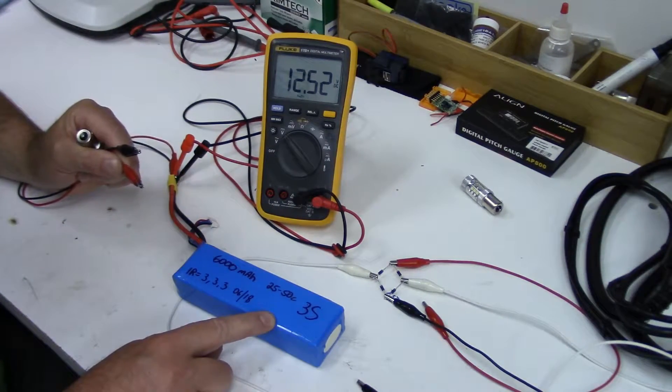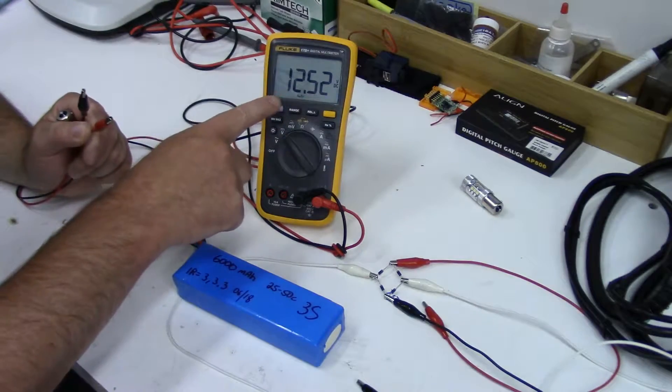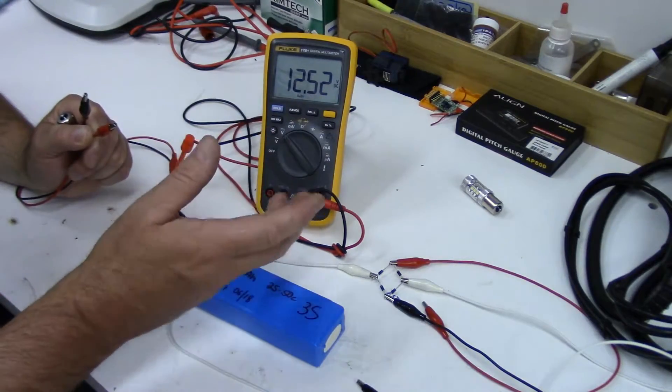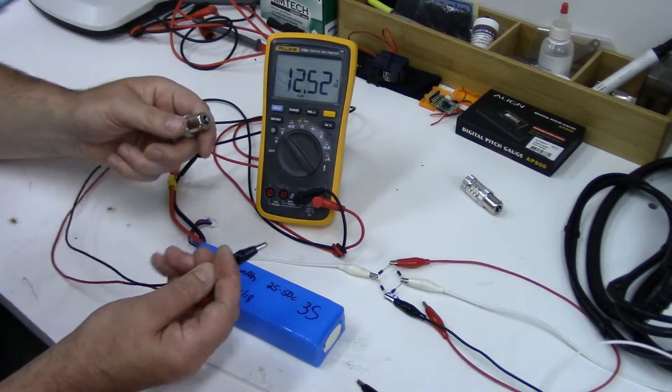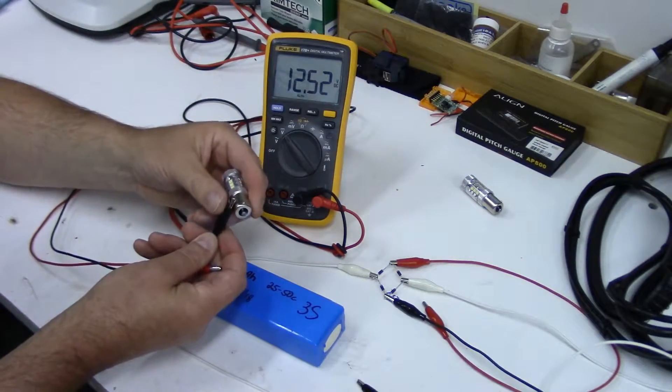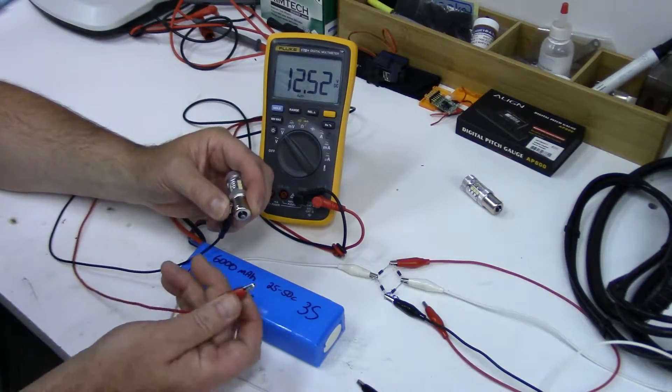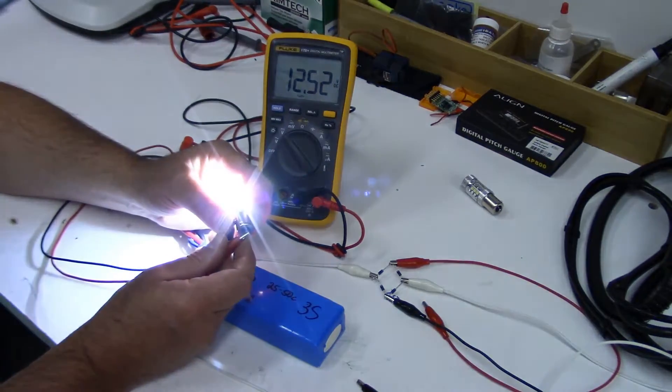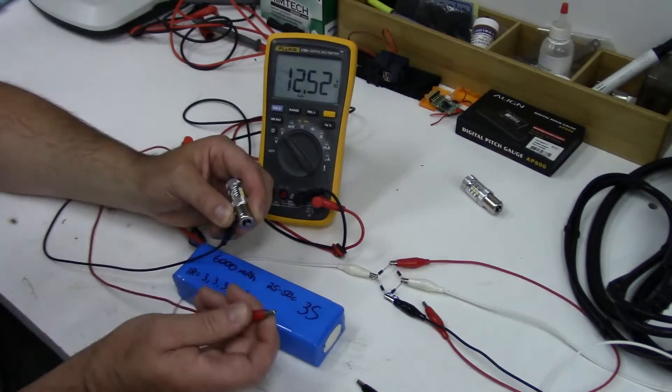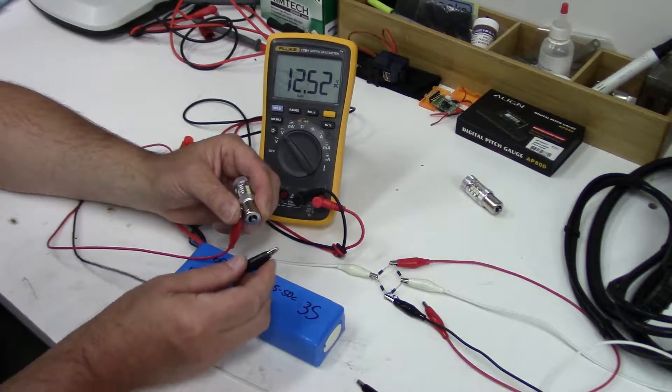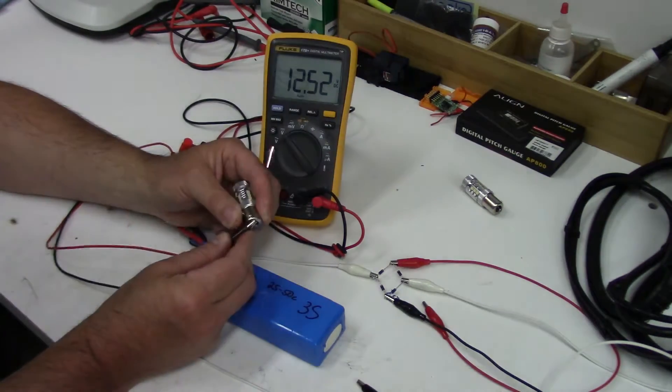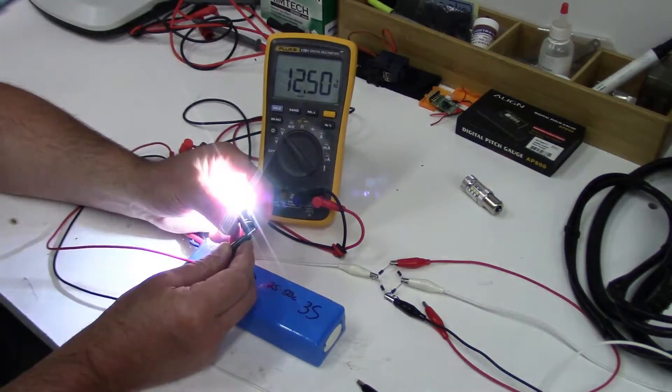We've got a 3S lipo pack with the meter hooked up to it. It's putting out pretty much fully charged 12.52 volts DC. So we'll just do it the normal way. Negative on the base, positive on the pin, and LED lights. No problem. So will it blow the LED or will it be safe if we reverse it? Holy smokes! She still lights.